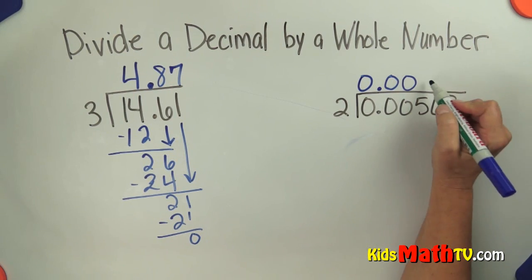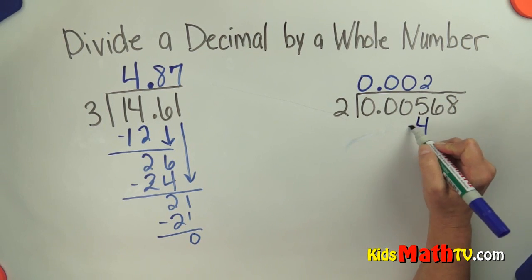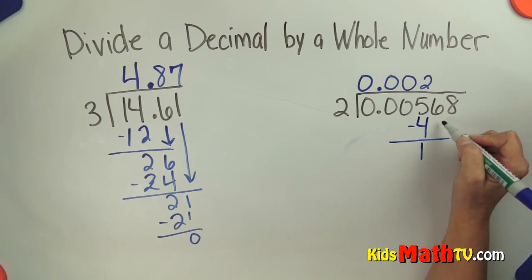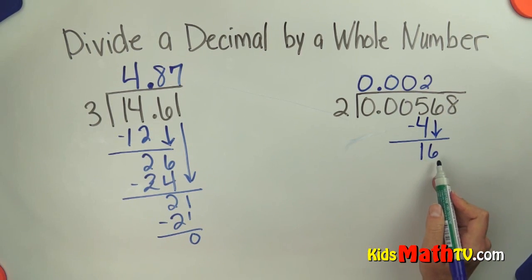Now how many twos in 5? 2. 2 times 2 is 4, subtract 1, bring down a 6. How many twos in 16? 8, multiply 16.